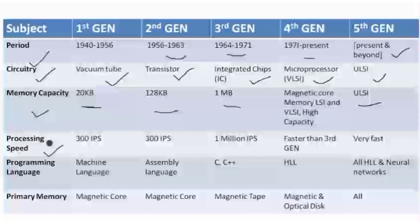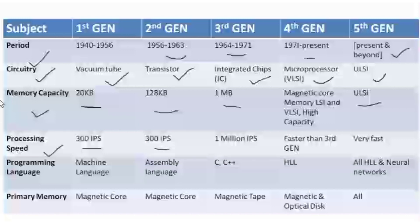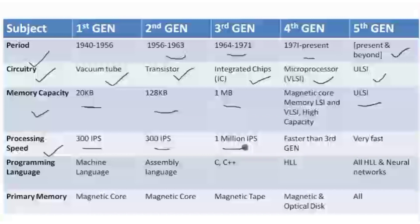Next is processing speed. Processing speed is measured with respect to IPS, which stands for Instructions Per Second. In the first generation and second generation they used 300 IPS. By later generations, you are capable of executing more than one million instructions per second, and for the fifth generation it is beyond this — very, very fast.